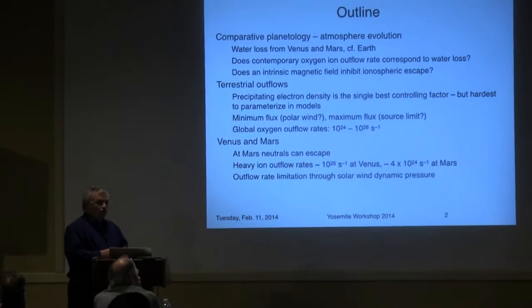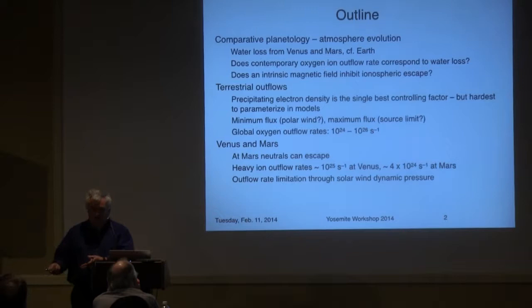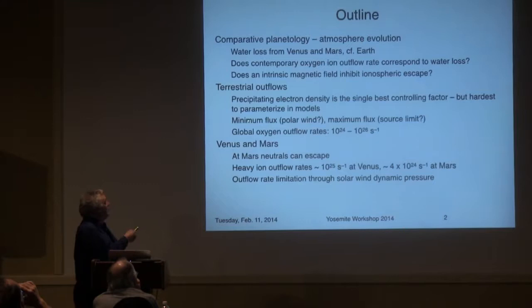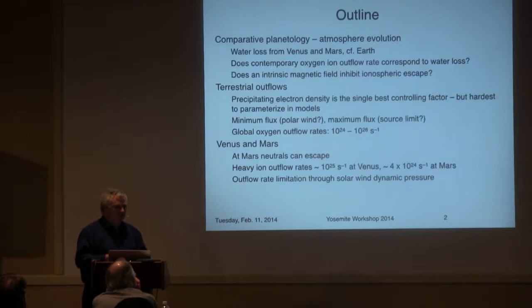So the outline is this: start with the big picture of comparative planetology. The issue we're talking about is atmospheric evolution, and the question is what is the rate of water loss from Venus and Mars? The reason why everybody cares about that is you need water for life. So why are Venus and Mars so dry and the Earth so wet? And does the contemporary oxygen ion outflow rate tell us the rate at which water is lost from the planet?